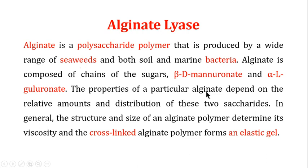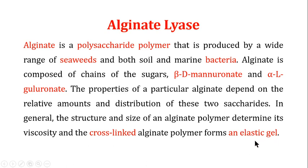The properties of a particular alginate depend on the relative amount and distribution of these two saccharides. Seaweeds, marine bacteria, and soil bacteria all produce alginate, but they differ in the relative amounts and distribution of these two saccharides. Generally, alginate is a cross-linked polymer that forms an elastic gel. When alginate is produced by bacteria in the lungs of cystic fibrosis patients, this elastic gel blocks the airways, making breathing difficult and acting as a source of further bacterial infection.